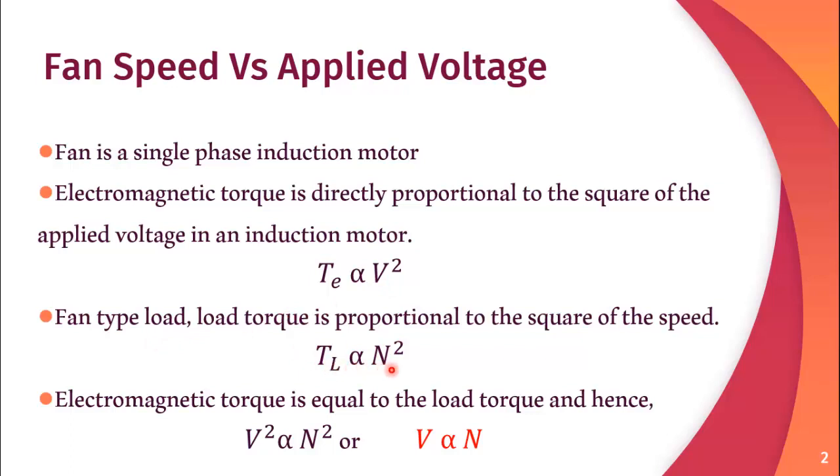It means that as the speed of the fan changes, the force required to rotate the fan at that speed also changes. But to rotate the fan at this speed, both the torque must be equal. Therefore we can also equalize V square and N square. Or we can say V square is directly proportional to the N square or applied voltage is directly proportional to the speed of the fan.